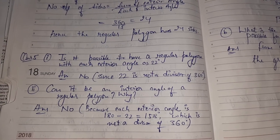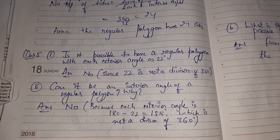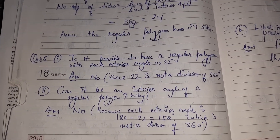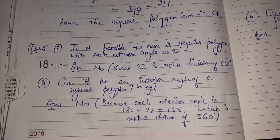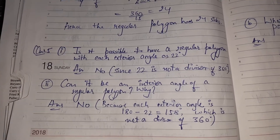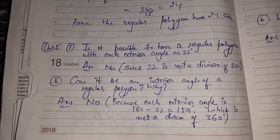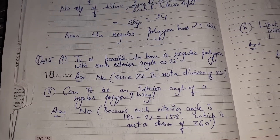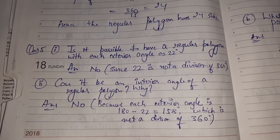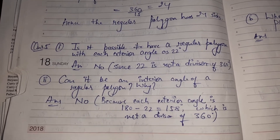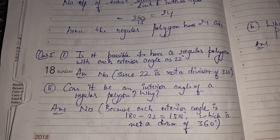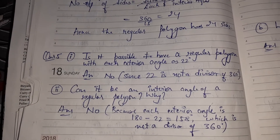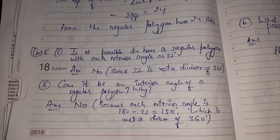Question number 5: Is it possible to have a regular polygon with each exterior angle as 22 degrees? The answer is no, since 22 is not a divisor of 360 — 22 cannot divide 360 fully, so it is not possible. For the second part, can it be an interior angle? No, it cannot, because 180 minus 22 equals 158, which is also not a divisor of 360.